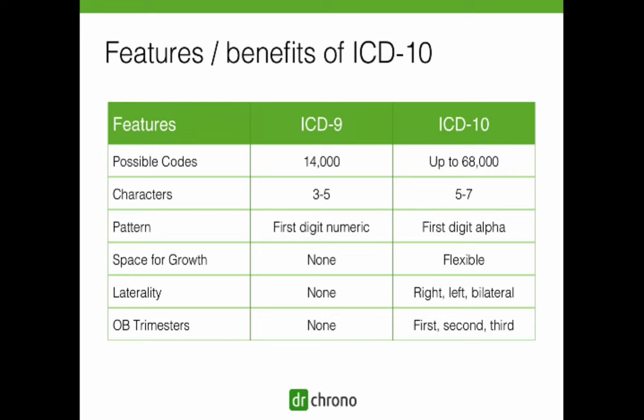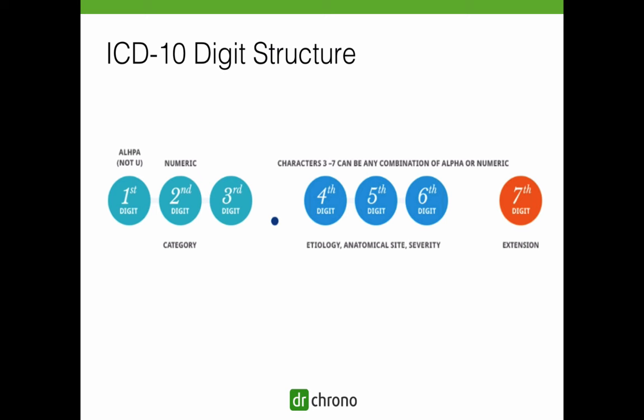Let's move on to the digit structure. This is the basic anatomy of the ICD-10 code sets with seven characters, though there are also code sets with less than seven characters. The first three digits are referred to as a category and the first character of the category is always alpha. Digits 2 to 7 can be either alpha or numeric. Digits 4 to 7 describe the etiology, the anatomical side, severity, and complication of the medical condition.